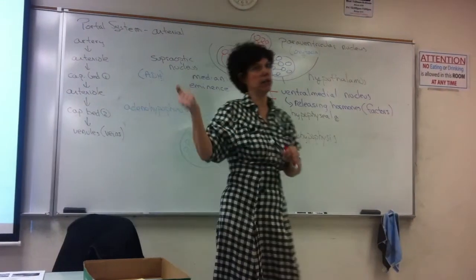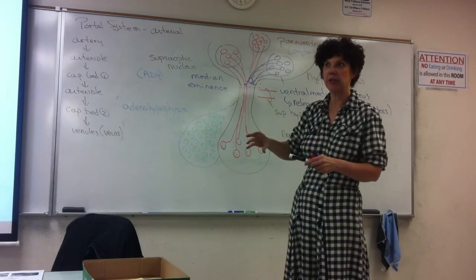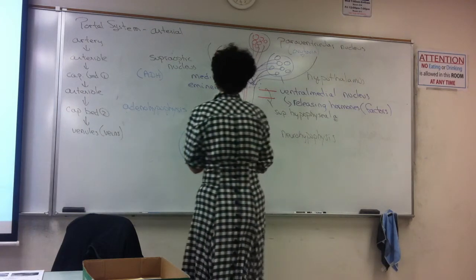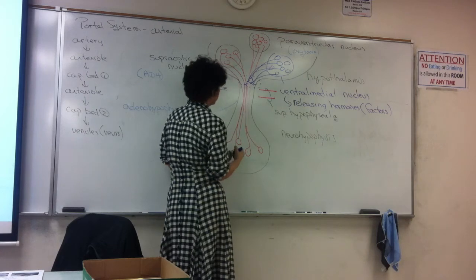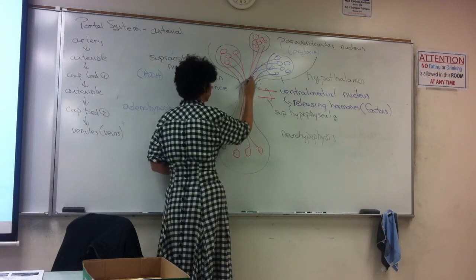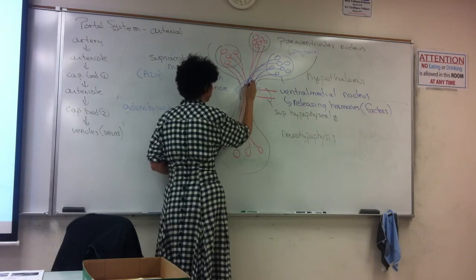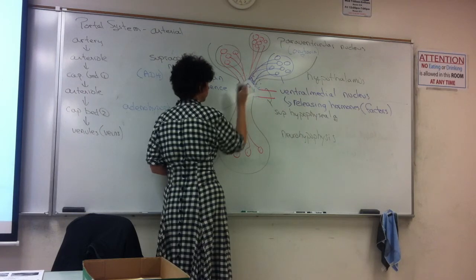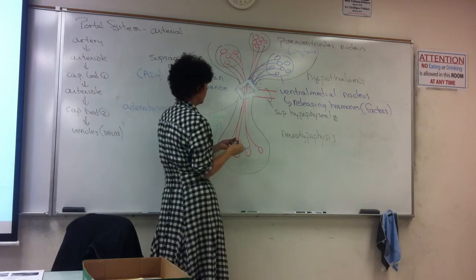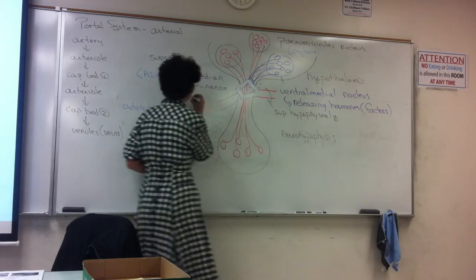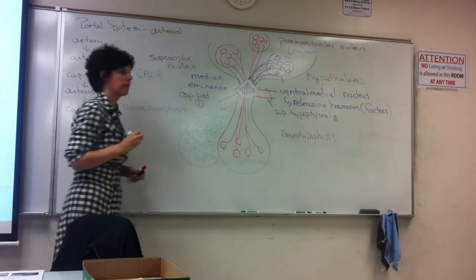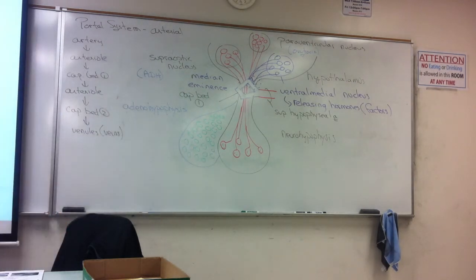In our portal system, we have an artery that breaks down into arterioles and then our first capillary bed. This is going to break down into arterioles and capillaries. That's our illustration for our capillary bed. This is capillary bed one, in the median eminence.